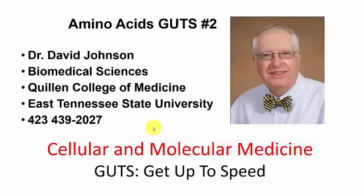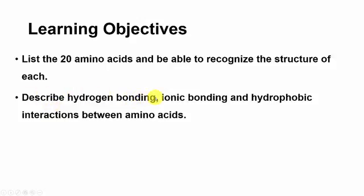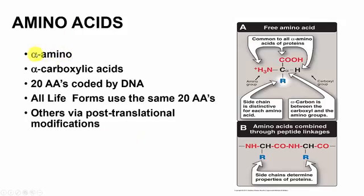This is GUTs module number two on amino acids. The learning objectives: you should be able to list the 20 amino acids and recognize the structure of each, describe hydrogen bonding, ionic bonding, and hydrophobic interactions between amino acids. Amino acids are alpha amino acids — alpha carboxylic acids — meaning they have a central alpha carbon, an alpha amino group, and an alpha carboxylic acid group. There are 20 amino acids coded by the DNA; all life forms use the same 20 amino acids, from deadly viruses to all sorts of organisms. Others are generated via post-translational modification, where the R group is modified to get a slightly different chemical function.